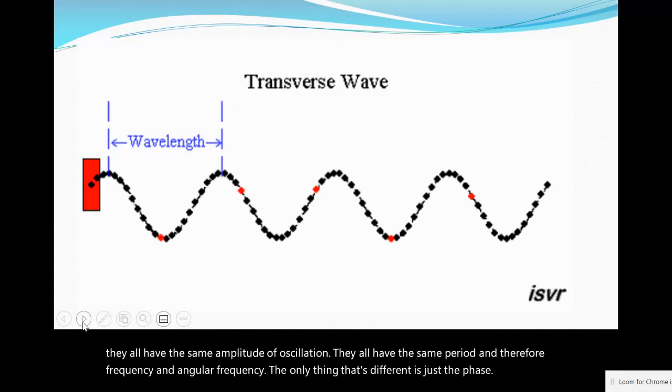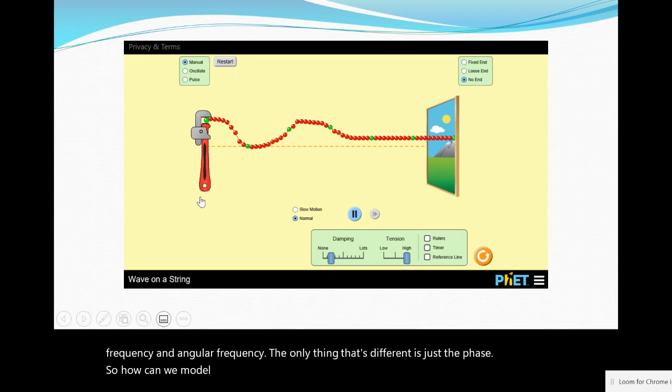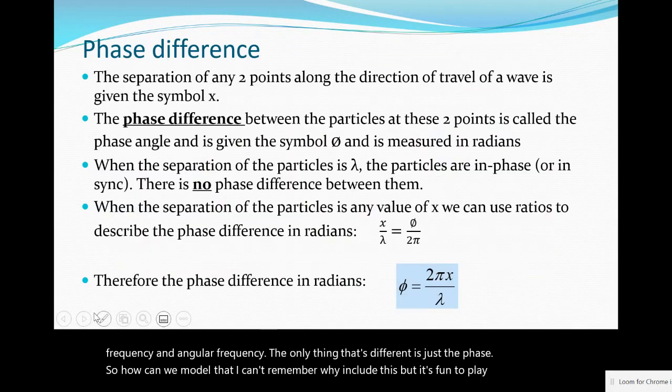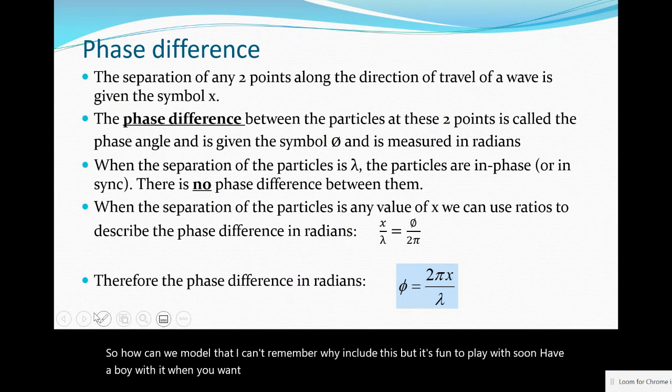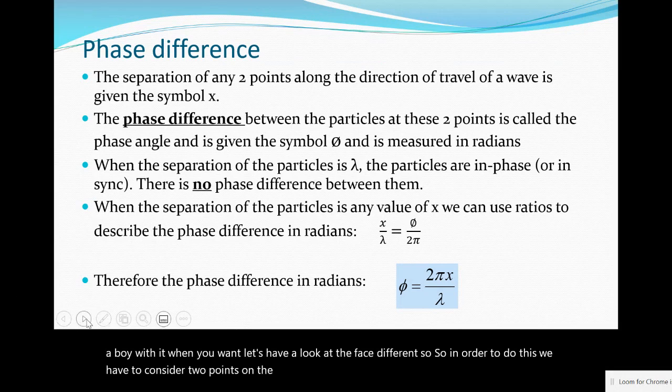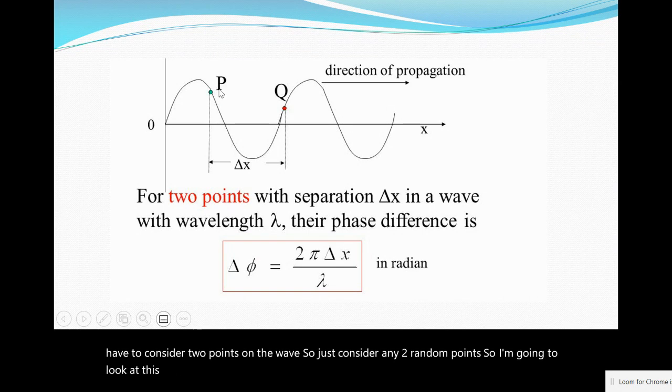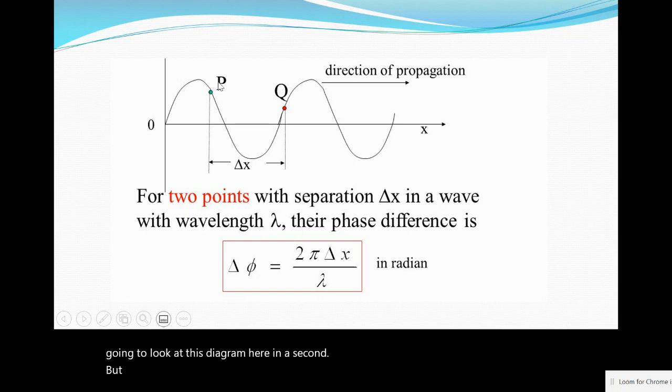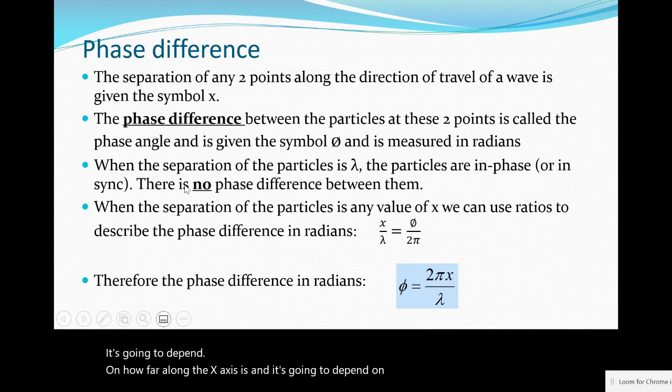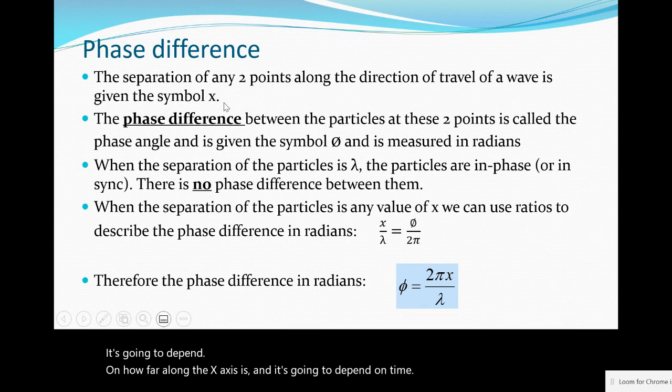Let's have a look at the phase difference. In order to do this we have to consider two points on the wave. The position of that point in the y direction is going to depend on two things: how far along the x axis it is and time. Let's imagine that these points are separated by a distance x.